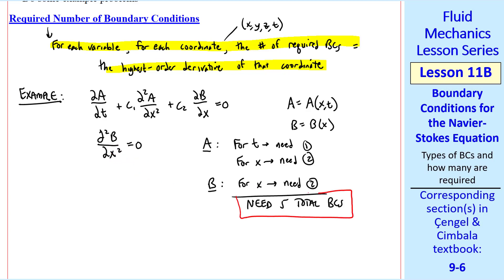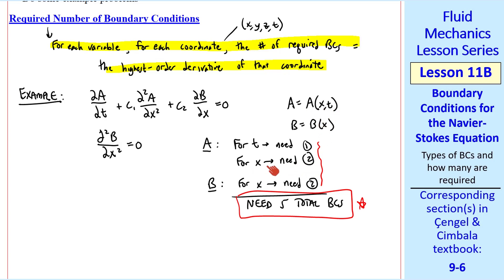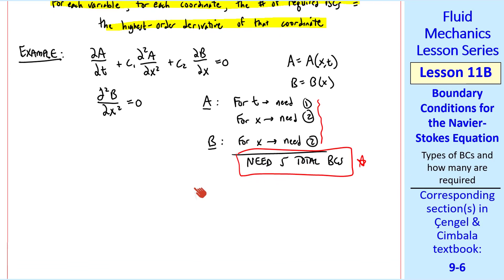Our answer then is that we need five total boundary conditions, just by adding these up. For the first boundary condition, when we say for t we need one initial condition, that means that at all x locations in our domain, we specify a at some time t, typically t equals zero. For x, we need two boundary conditions: at one x we specify a at all times, and at a second x we specify a at all times. Since b is only a function of x, we specify b at one x and then at another x, since we need two of them.